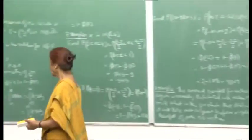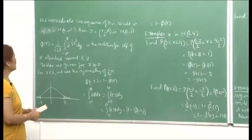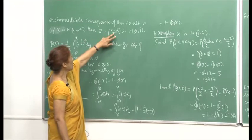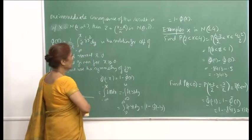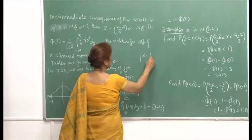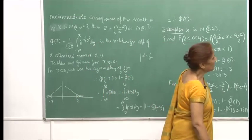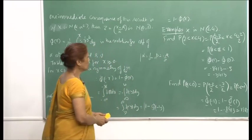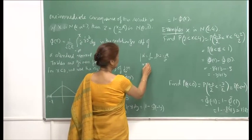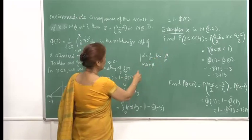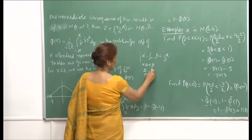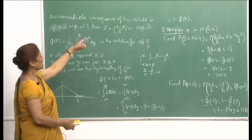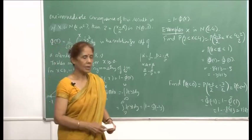An immediate consequence of this result is that if x is N(μ, σ²), then z = (x − μ)/σ will be N(0, 1). Because here α is actually 1/σ, if you compare it with αx + β, and your β is −μ/σ. So if you substitute, the mean will become μ/σ − μ/σ = 0. Similarly, you can show that the variance will be 1. So the transformation (x − μ)/σ results in a standard normal variate, which we refer to as N(0, 1).